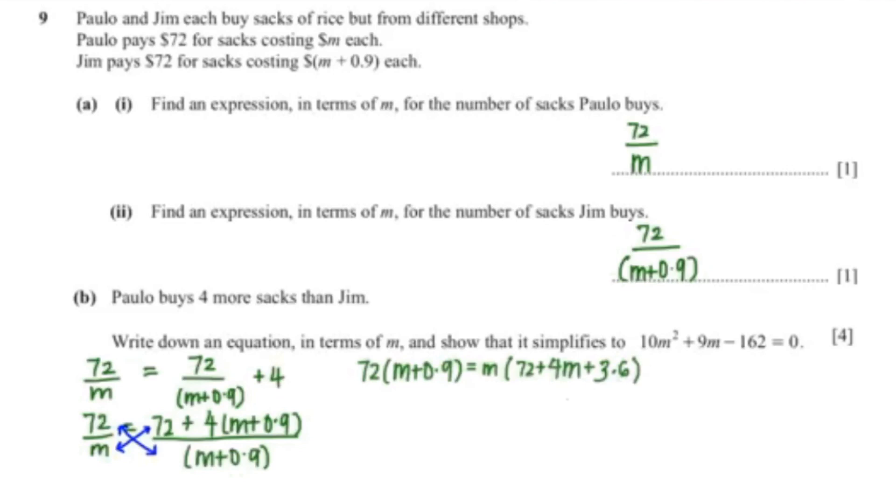Now I'm just going to expand the brackets on both sides. So that is 72M plus 64.8 equals to 72M plus 4M squared. So that's 4M squared plus 3.6 which I'm going to write in a fraction form.